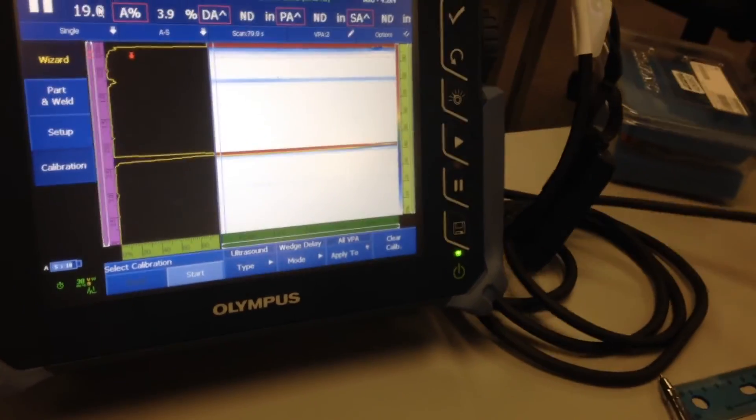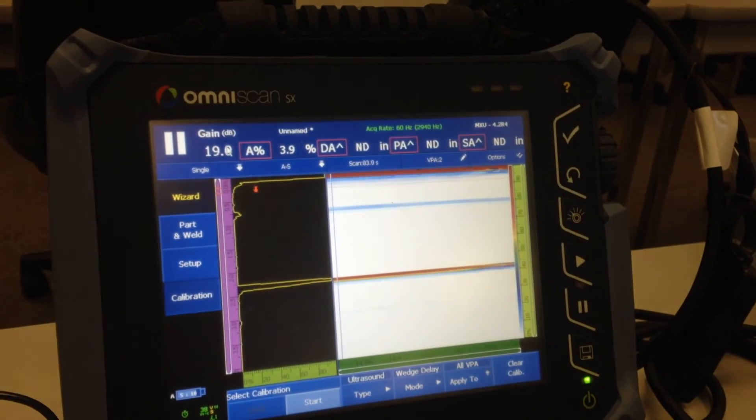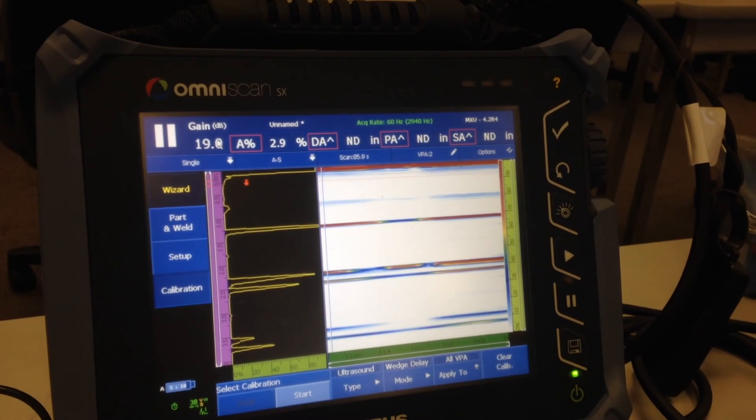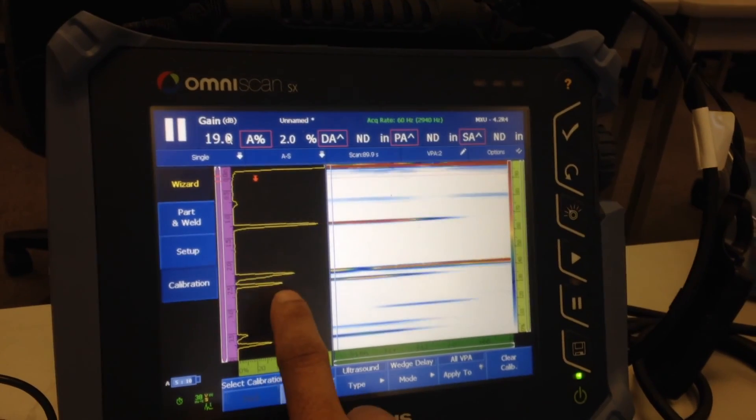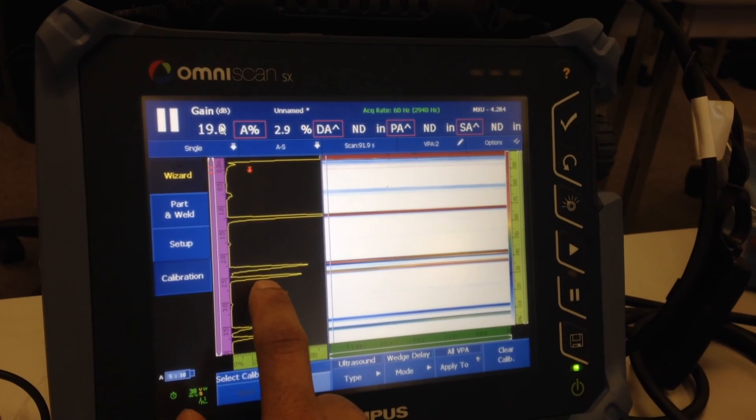Now once you find out the wedge signal, then place your probe and wedge on the calibration block and watch for the other signals that pop up on the screen, and that is your actual back wall.